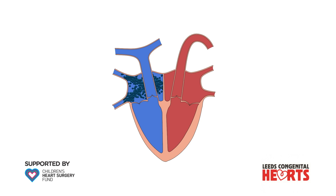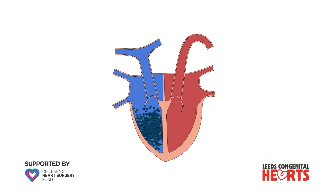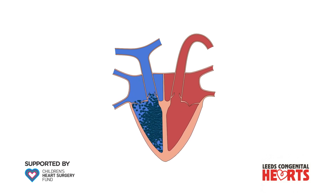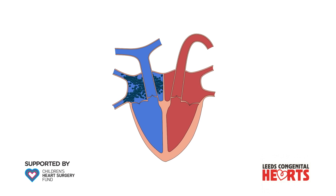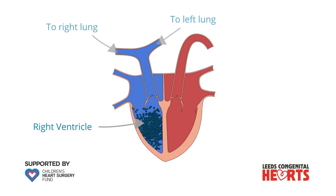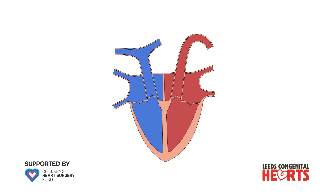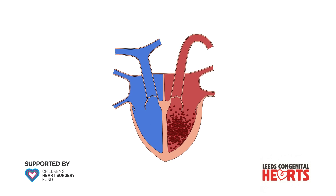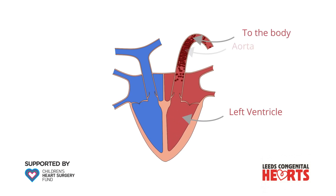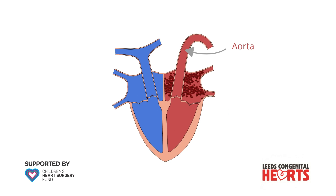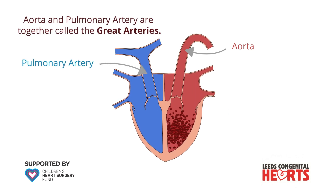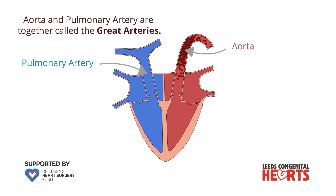In the normal circulation, blood that is low in oxygen returns from the body, in veins, to the right side of the heart, where it is pumped from the right ventricle to the lungs through the pulmonary artery. Blood picks up oxygen in the lungs and returns to the heart where it is pumped from the left ventricle to the body through the aorta. The aorta and pulmonary artery are together referred to as the great arteries.